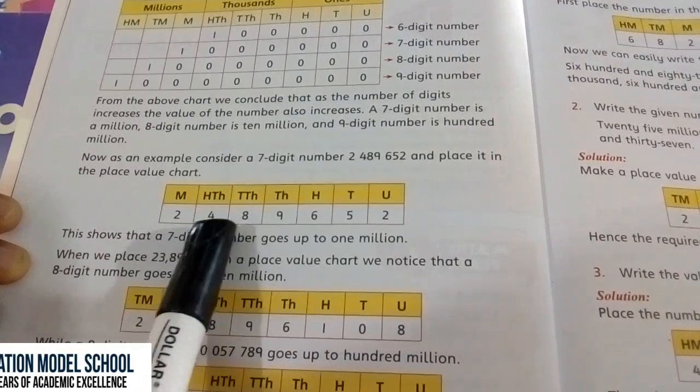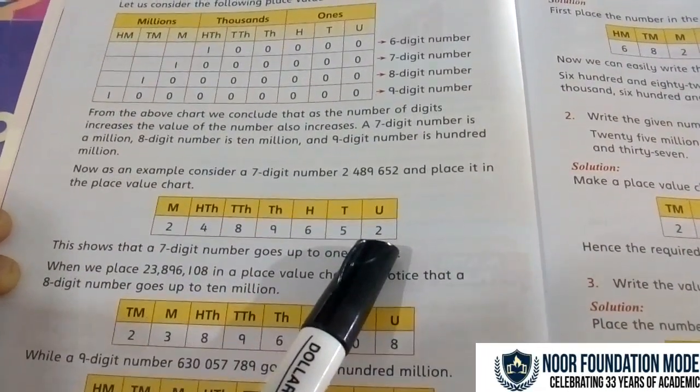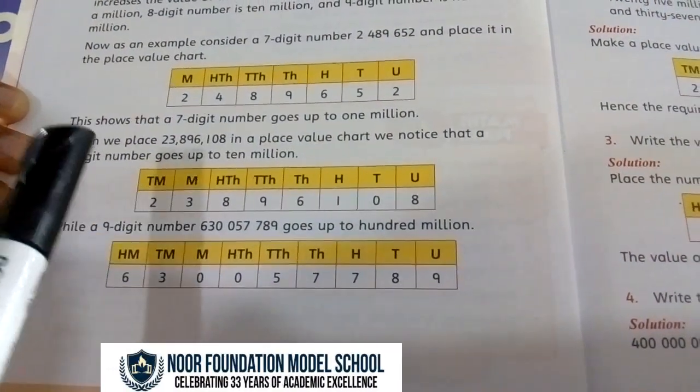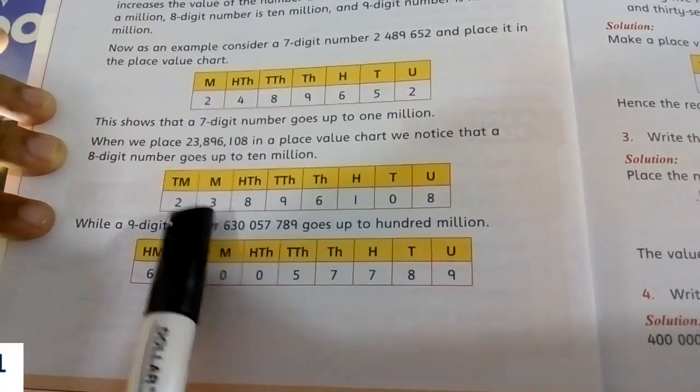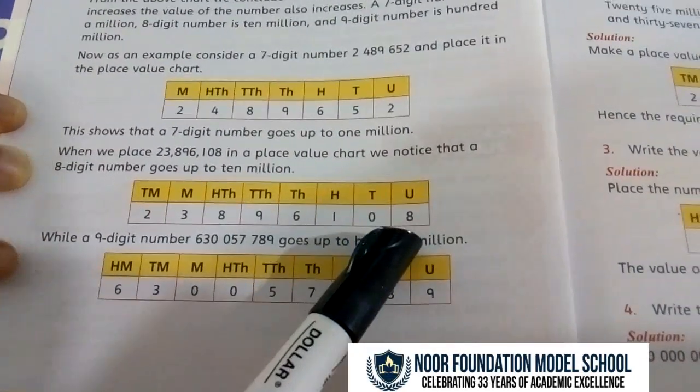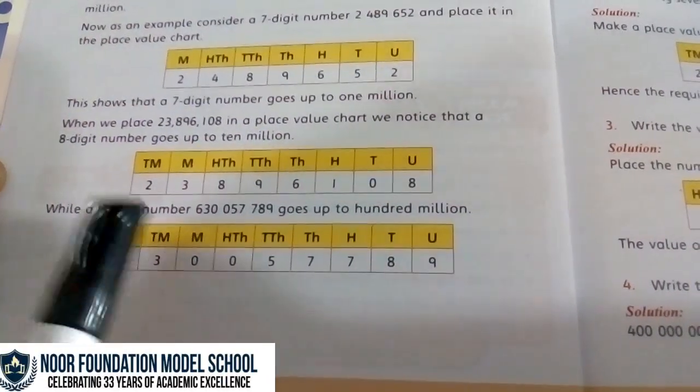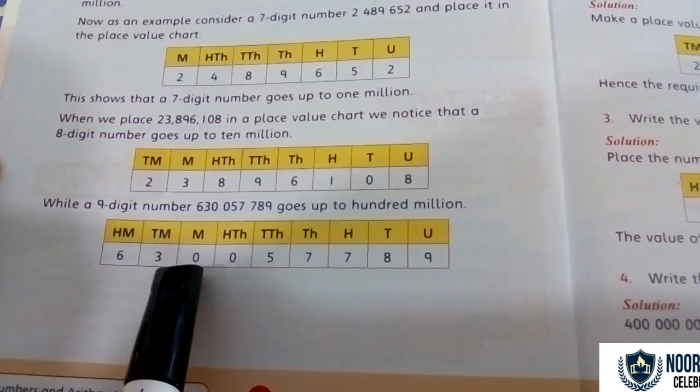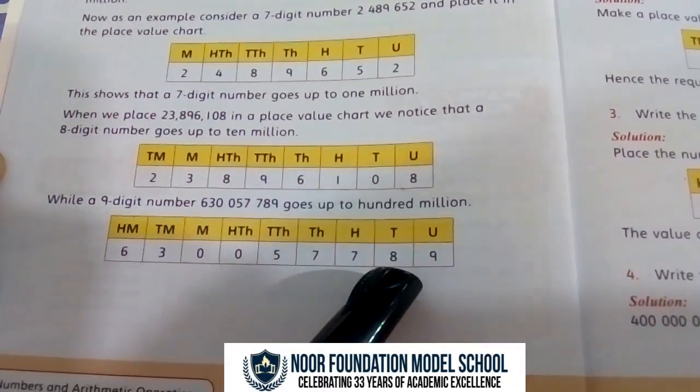Now say this number: 2,489,652. In this way, you have to create a place value chart for this type of number and say this number: 23,896,108. For a 9-digit number, you first write the places and then say it: 630,057,789.